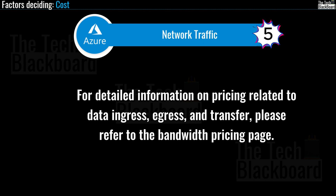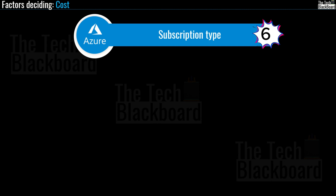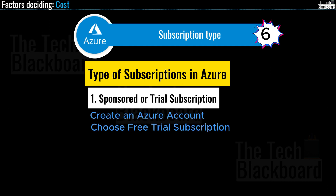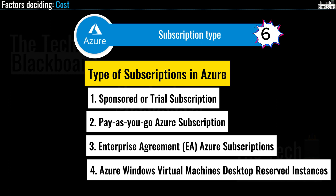The next factor is subscription type. Certain types of Azure subscriptions come with usage allowances that impact cost. For example, an Azure free trial subscription grants access to various Azure products and services free for 12 months. The free subscription provides a credit of $200 that can be utilized in the initial 30 days of signing up — you can explore all Azure services and products absolutely free. When you move to a pay-as-you-go subscription, you pay for services and products as you use them.